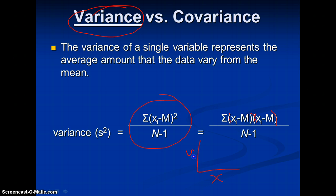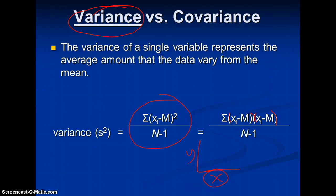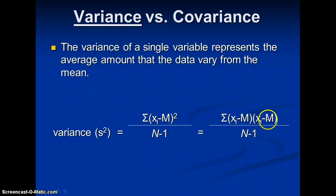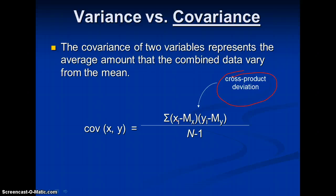But what if we wanted to look at how two variables co-varied — an x and a y? That would be the average amount that the combined data vary from the mean. So instead of squaring (x_i minus m) and multiplying it by itself, we look at the x variable and the y variable together — how they vary with each other. This is called a cross-product deviation: the difference from the mean for each individual score for x and each individual score for y, summed and divided by n minus 1.